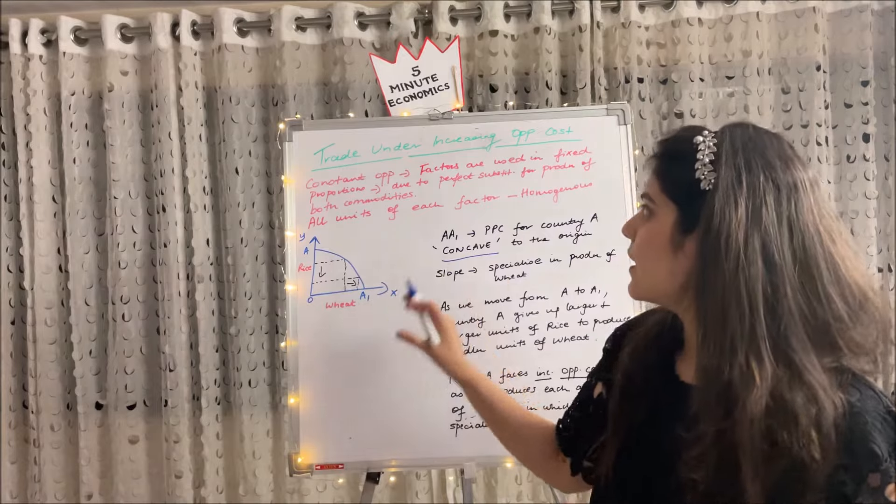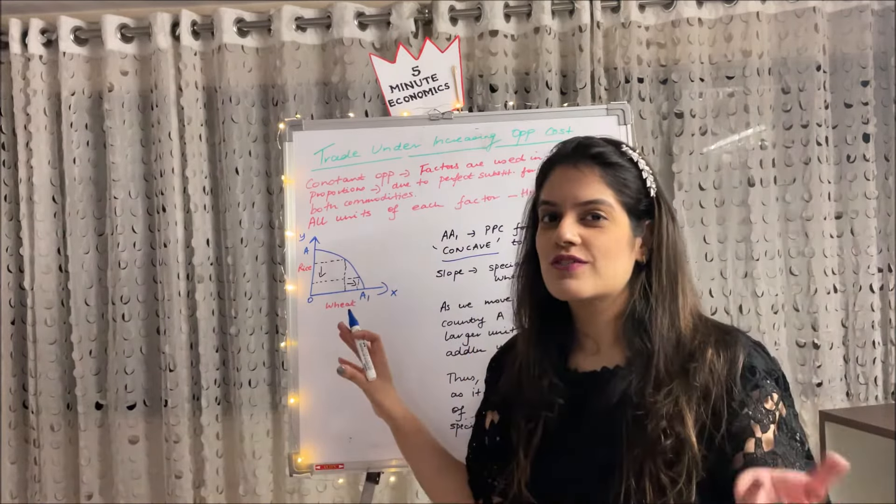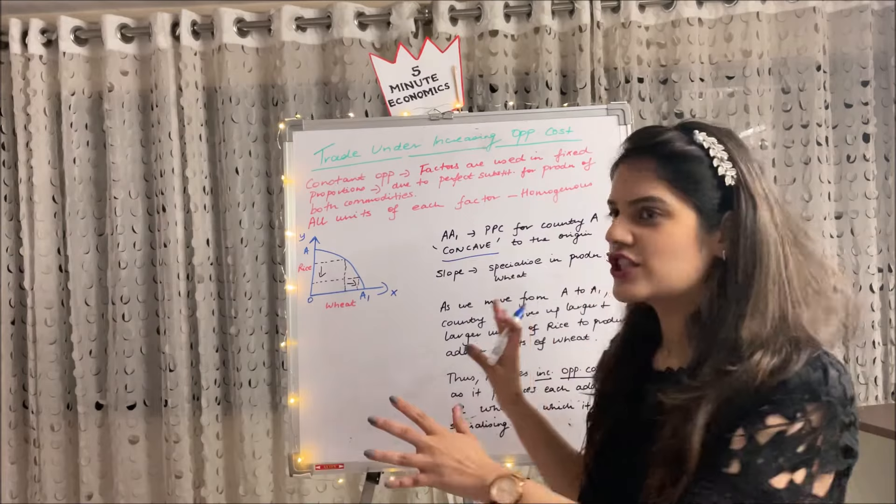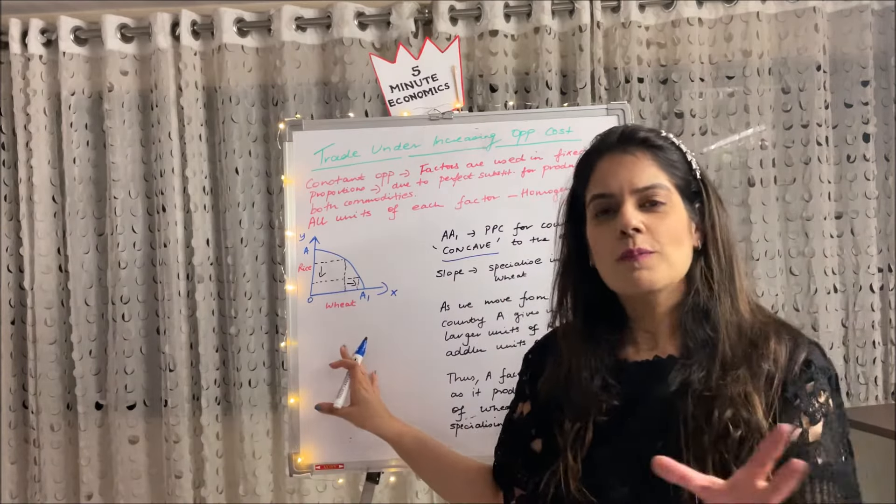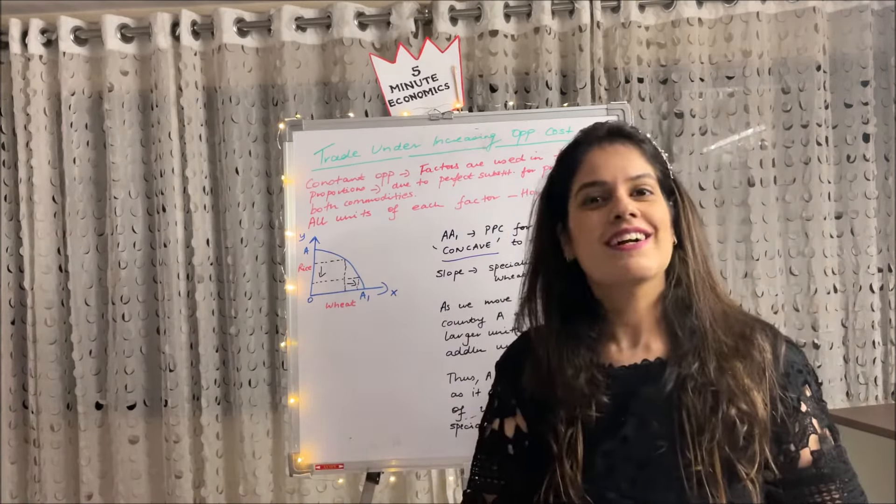So this is all about what you need to know. I've kept the diagram pretty simple. In a few books, it's very complicated, but for your simplification, I've kept it like that. So I hope you are clear with the concept of increasing opportunity cost.